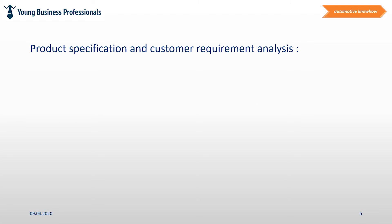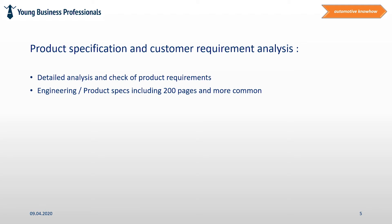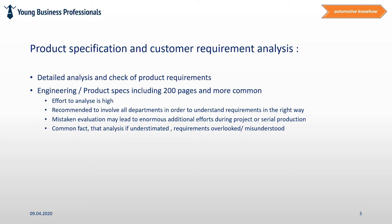Product specification and customer requirement analysis. At the beginning of each RFQ phase, it is useful to create an overview of all customer requirements. This is of special importance as it is a common fact that requirements won't be analyzed in the right way or won't be recognized at all. If the design of the product is not considering them, this might cause mistrust but also cost issues later on. In many cases, customers are providing specification sheets with more than 200 pages and it typically takes a lot of effort to analyze them in detail. It is wise to include all functional areas in order to divide the effort and also to make sure technical requirements are understood in the right way.